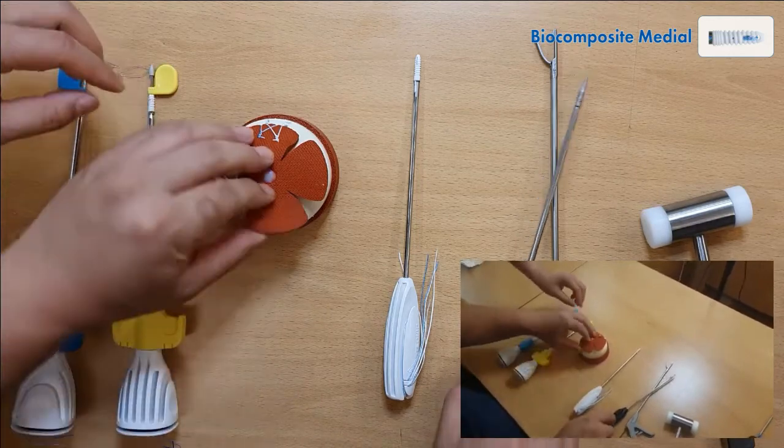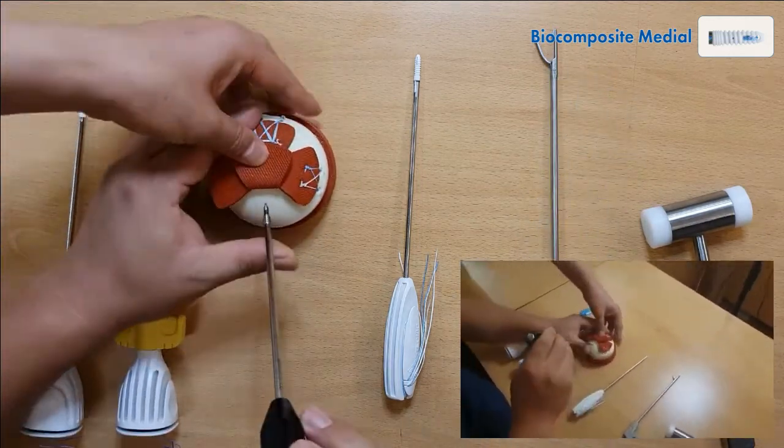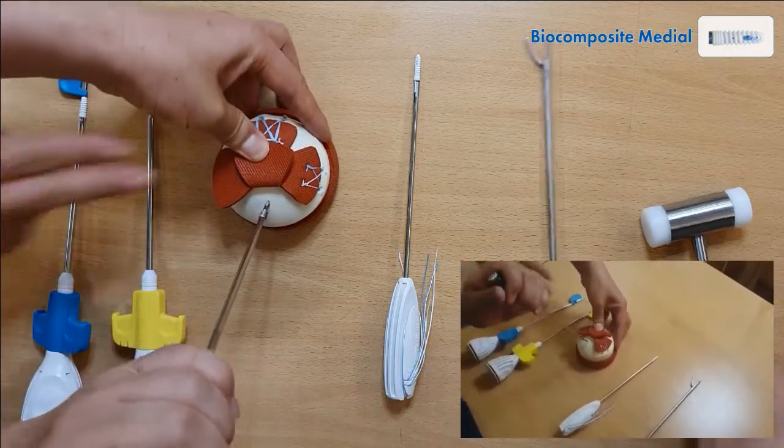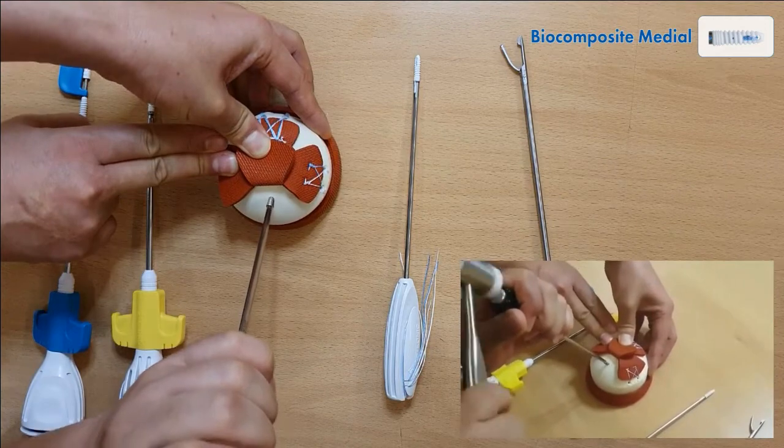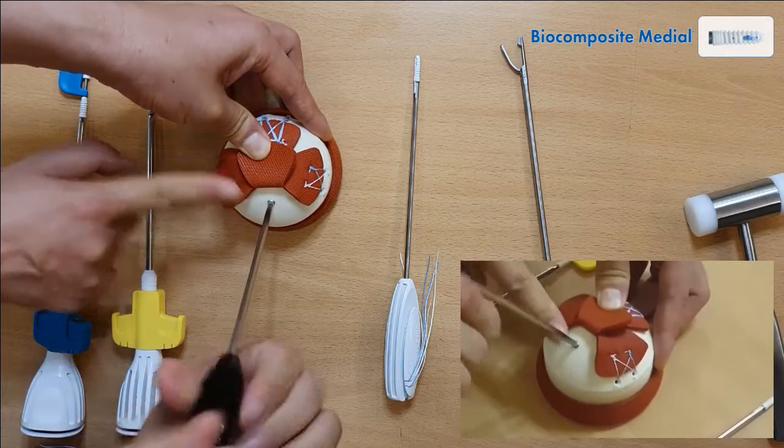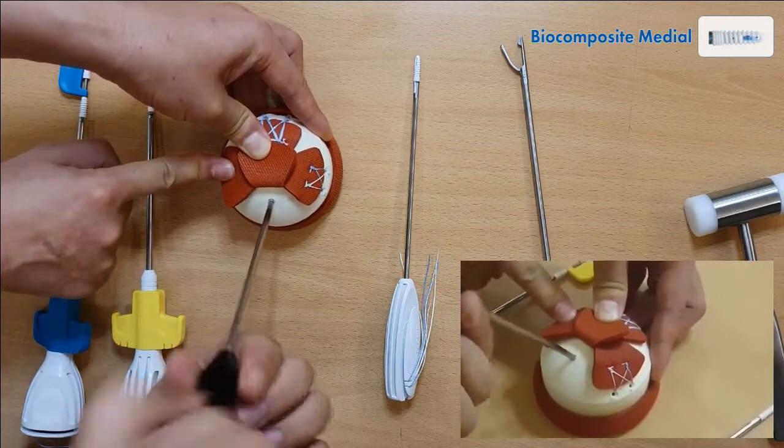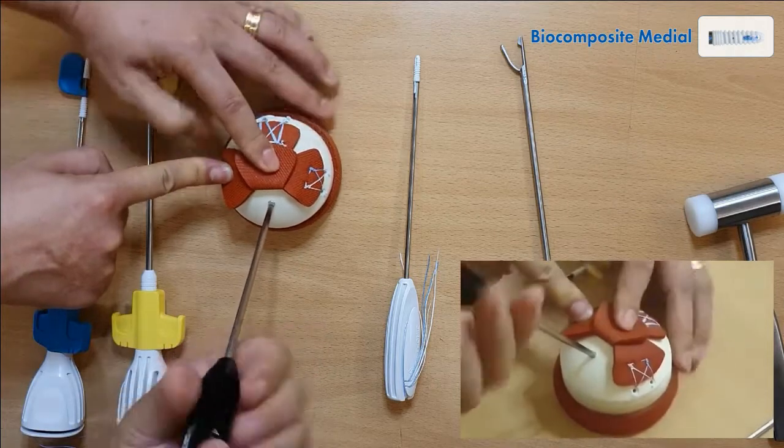I'm going to tap the medial side. Tap it so it could be a little easier to insert the medial anchor.